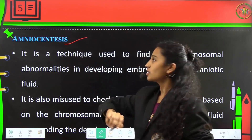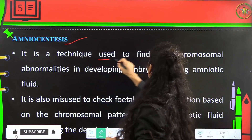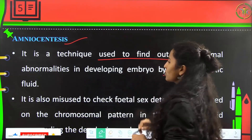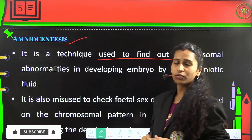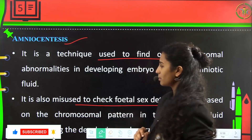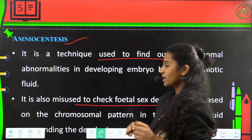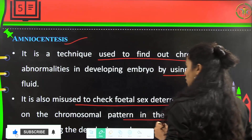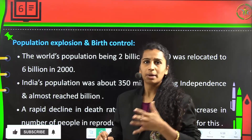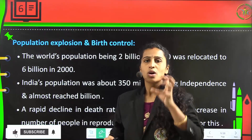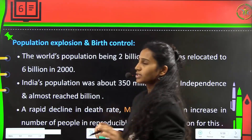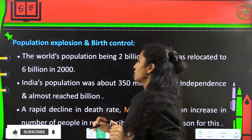Amniocentesis is a technique used to find out chromosomal abnormalities in a developing embryo by using amniotic fluid of the fetus. It is also misused to check fetal sex determination based on chromosomal patterns in the amniotic fluid. In India, amniocentesis is banned for sex determination; it is legally used only to check chromosomal abnormalities.